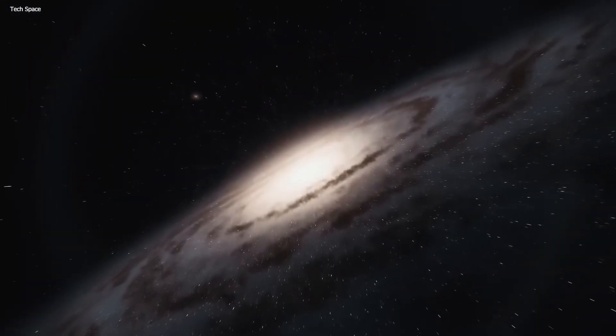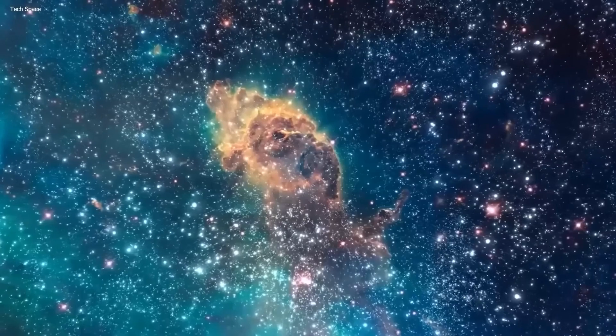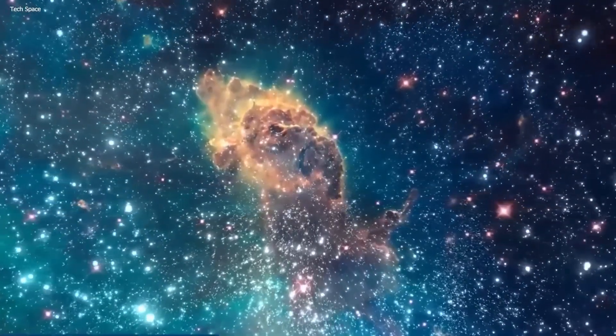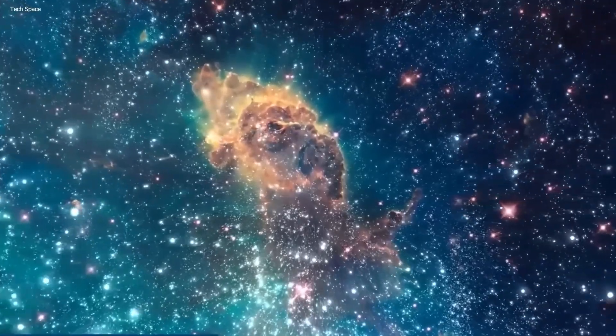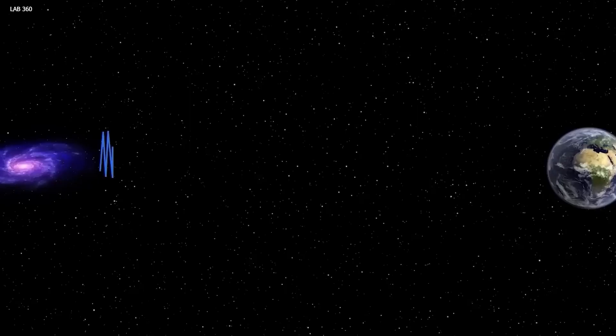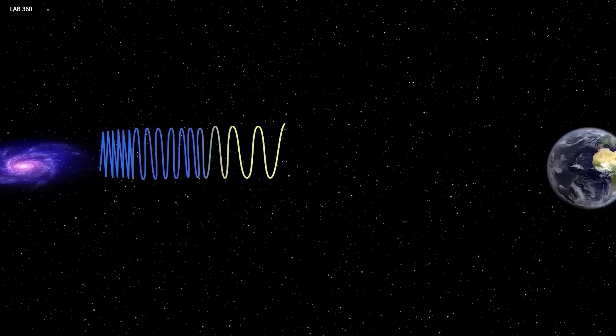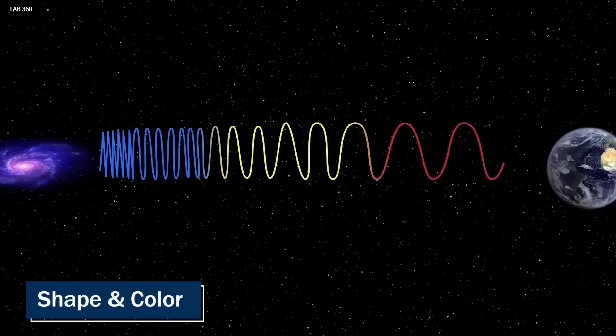But what does the word redshift mean? Well, when we observe the light from faraway galaxies, we notice that it has a slightly redder color than what was emitted long ago. In simple terms, as the light stretches out over acres and acres of space, the color of the waves shifts to red. This causes the waves to arrive at Earth with a longer, redder wavelength. But why is the wavelength changing shape and color as it moves?